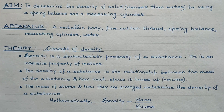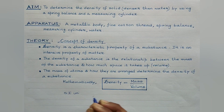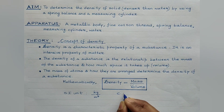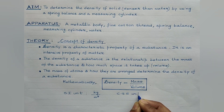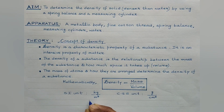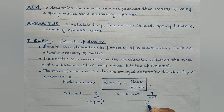Let us discuss the SI and CGS units of density. The SI unit of mass is kg while that of volume is meter cube, so the SI unit of density is kg per meter cube. The CGS unit: mass in CGS is measured in grams and volume in CGS is measured in centimeter cube, so the CGS unit is gram per centimeter cube.